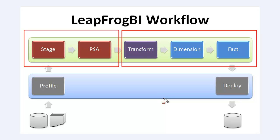Each of these components — stage, PSA, transform, dimension, and fact — have a variety of templates that you can use to start from. We're going to talk more about each type of template and when to use which in later courses. Just keep in mind that these five types are the core components in LeapFrog BI. I mentioned six originally: the sixth type is a connection component. Connections are stored separately from components so we can reuse them, making the entire development process that much more efficient.